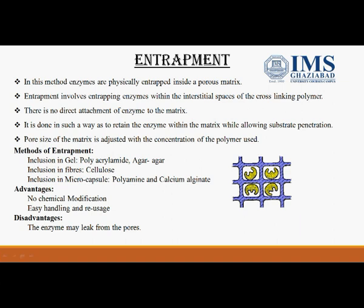Methods of entrapment include inclusion in gel polymers such as polyacrylamide and agar-agar, entrapment in fibers using cellulose, and micro-encapsulation using mixtures of polyamines and calcium alginates. Advantages include no chemical modification of the enzyme, ease of handling, and reusability. The disadvantage is that the enzyme can leak from the pores.